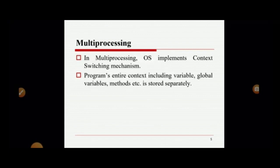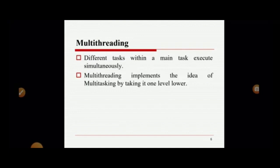In multi-processing, the OS implements a context-switching mechanism. The program's entire context — including variables, global variables, methods, etc. — is stored separately. But in multi-threading, the different tasks within a main task execute simultaneously. Multi-threading implements the idea of multitasking by taking it one level lower.